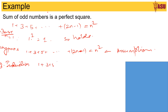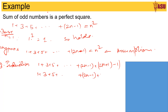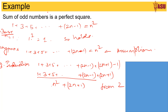Now we need to prove: 1 plus 3 plus 5 plus ... plus (2n minus 1) plus (2(n+1) minus 1) — replacing n with n plus 1, this equals 1 plus 3 plus 5 plus ... plus (2n minus 1) plus (2n plus 1). From the hypothesis, this entire sum equals n squared plus 2n plus 1. Factorizing, that is equal to (n+1) times (n+1), or (n+1) squared.